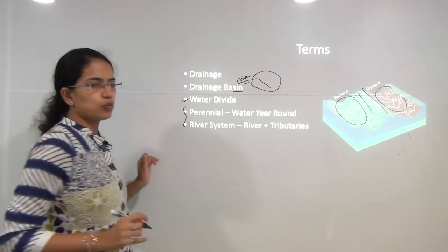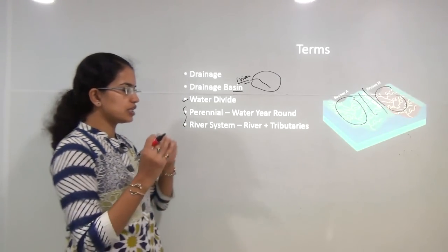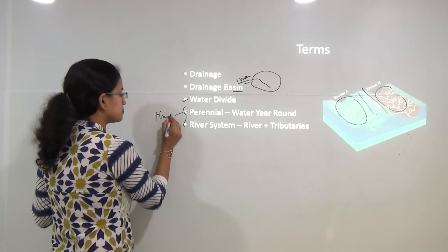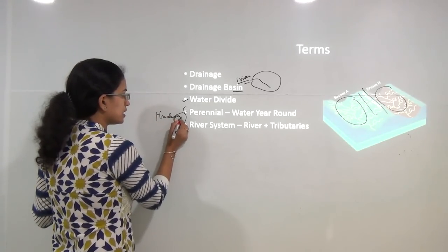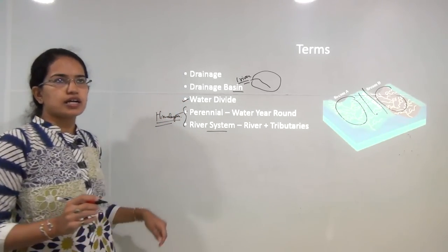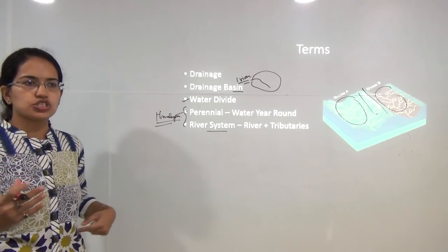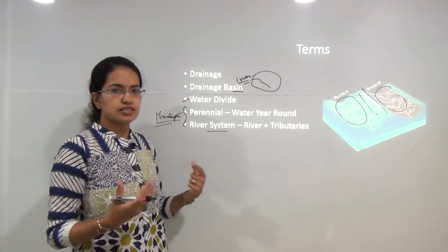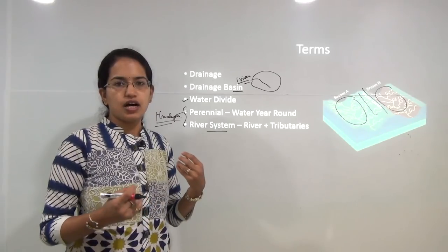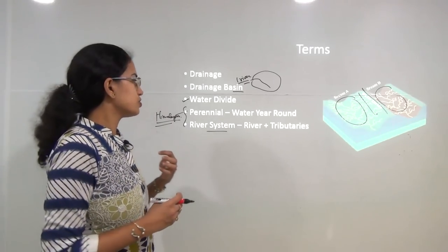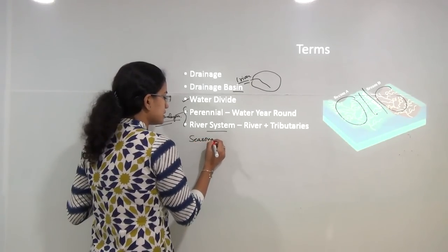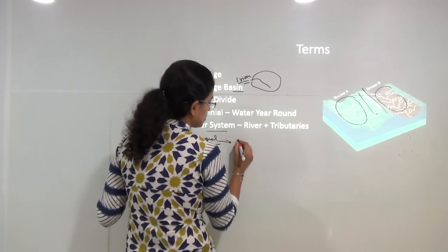There are two kinds of rivers. One is the perennial river that flows year-round — most rivers originating from the Himalayas are perennial. On the other hand, you have seasonal rivers, which are available in certain seasons and not others. They go dry when it's not raining, basically in the summer months. Seasonal rivers are characteristic of the peninsular area.